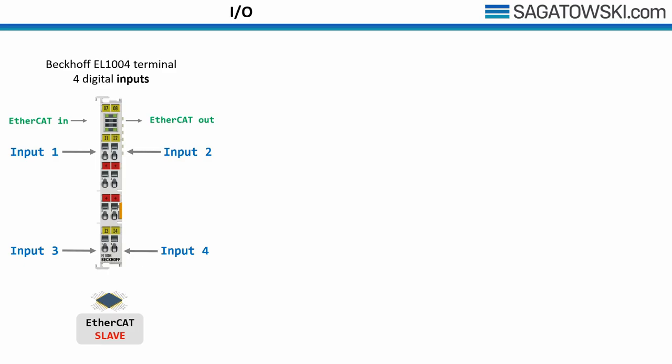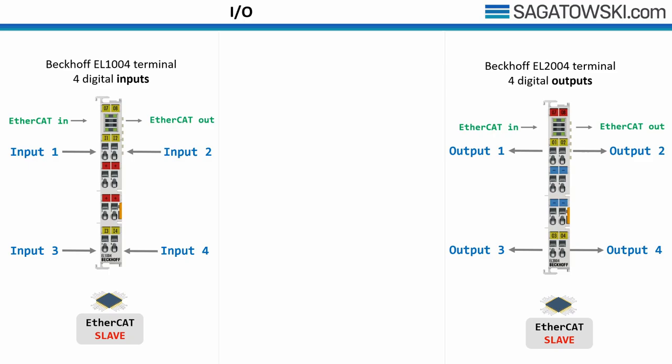There are also terminals to do the opposite — when you want to actuate something with a 24V output. The equivalent is the EL2004 terminal, which houses 4 digital outputs. Beckhoff are not the only ones manufacturing fieldbus devices with EtherCAT capability. One of my favorite devices is manufactured by the company IFM. This supports 4 channels of IO-Link, which is a bidirectional point-to-point industrial communication standard for connecting digital sensors or actuators based on a serial protocol, allowing it to exchange a vast set of data. These are just a few examples — there are thousands of other fieldbus devices out in the wild.